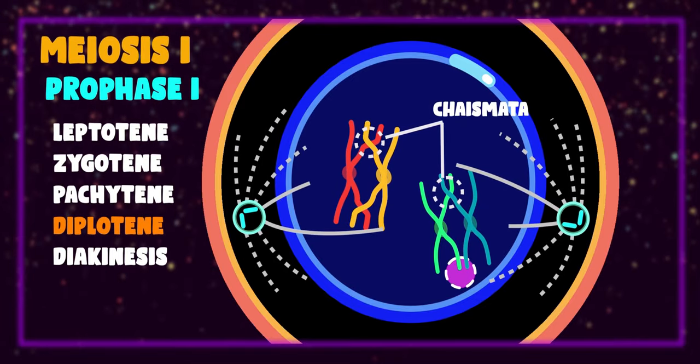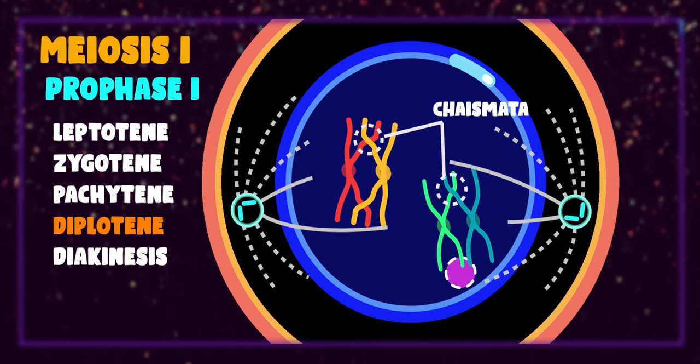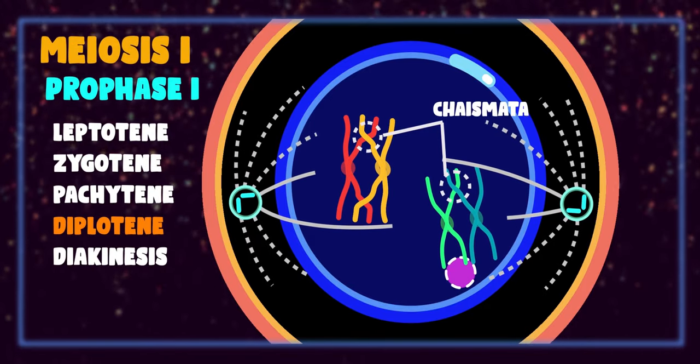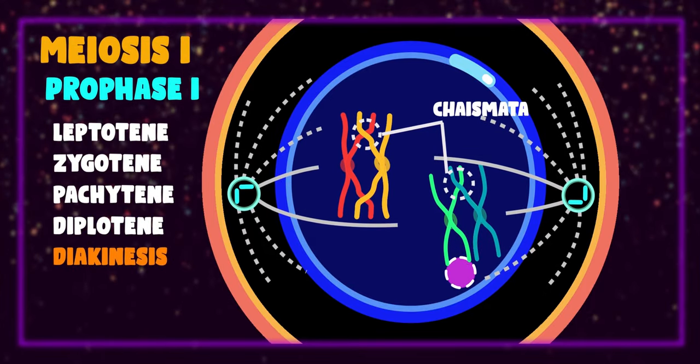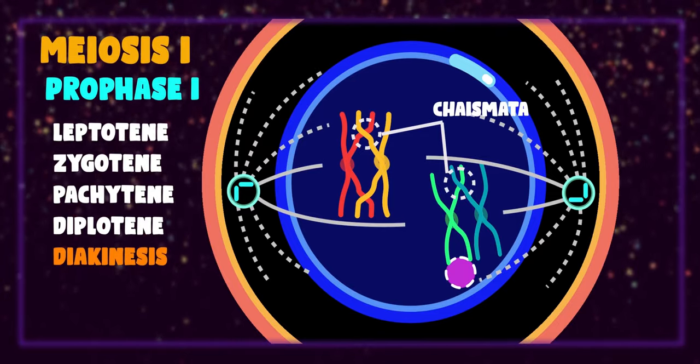This dissolution results in appearance of X-shaped structures between bivalents which represents the site of crossing over. These structures are called chiasmata.